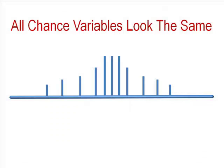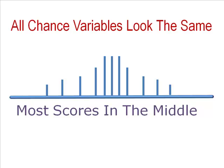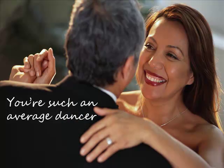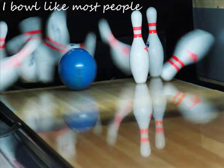Luckily, there is a pattern — all variables look the same. Regardless of what variable is being measured, the scores follow the same pattern: most scores are in the middle, and there are fewer and fewer on each end. Music ability, intelligence, tap dancing, golfing, singing, memorizing, talking, and sleeping all follow this pattern. There is some variation, but most scores are clustered in the middle.